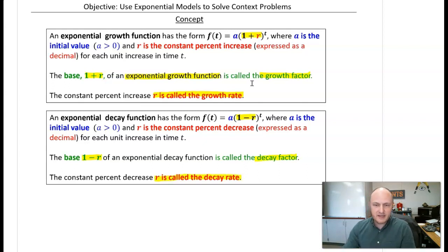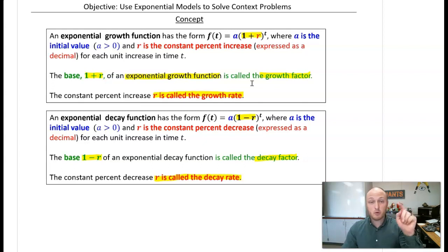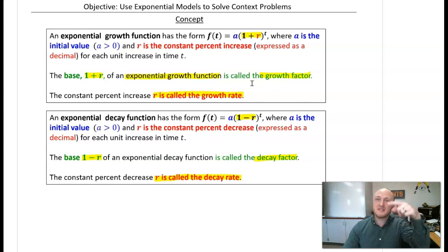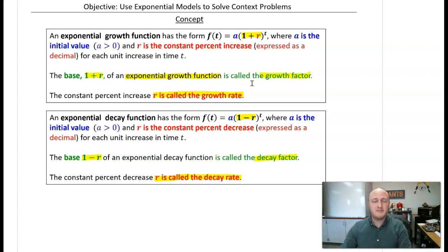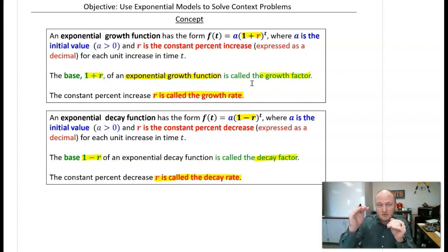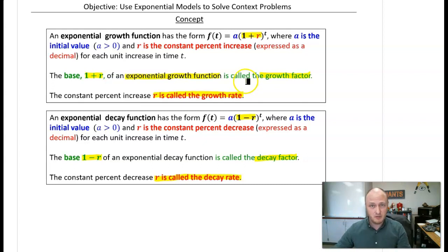For growth, the base is one plus r — that's the rate making it grow. For exponential decay, it's one minus r, where r is that rate by which we're decreasing every single time. So remember: growth is one plus r, decay is one minus r.